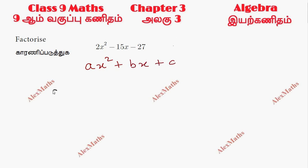By comparison, A value 2, B value minus 15, and C value minus 27. If you look at product and sum, product equals A into C, sum equals B.